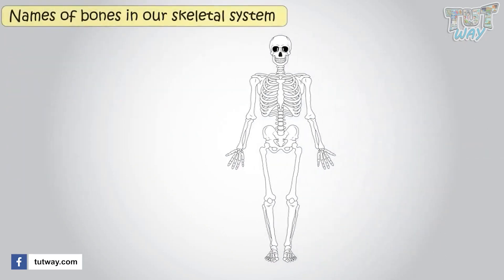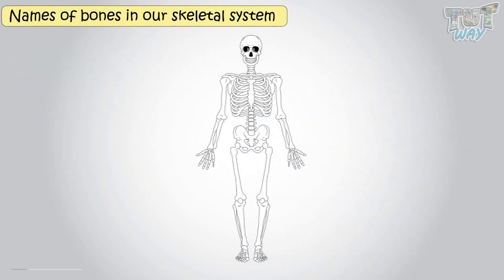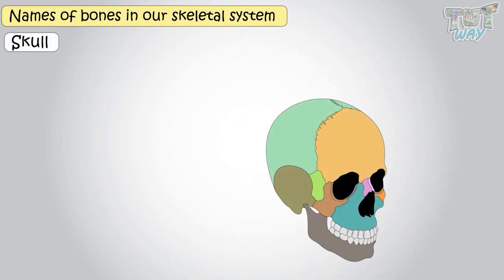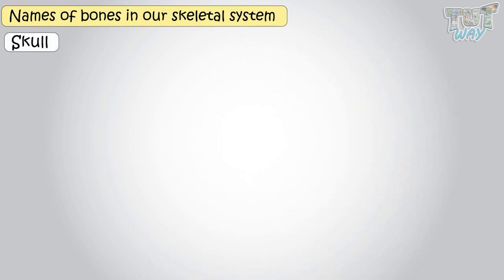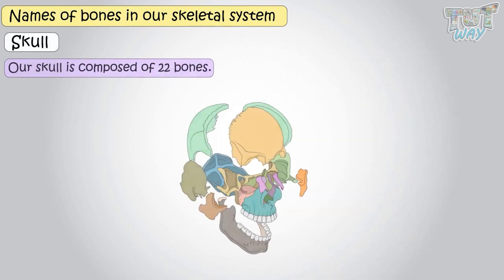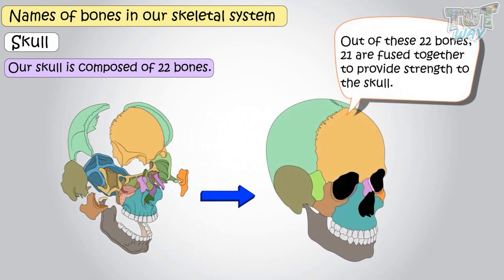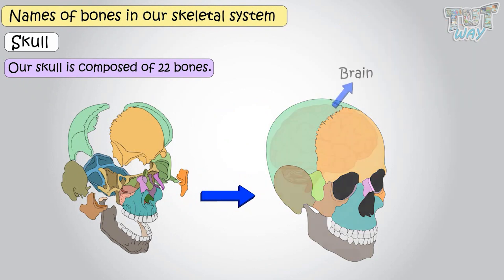Now we will learn the names of bones in our skeletal system. Let's start with our skull. Our skull is composed of 22 bones, out of which 21 are fused together and provide strength to the skull and protect the delicate brain inside.